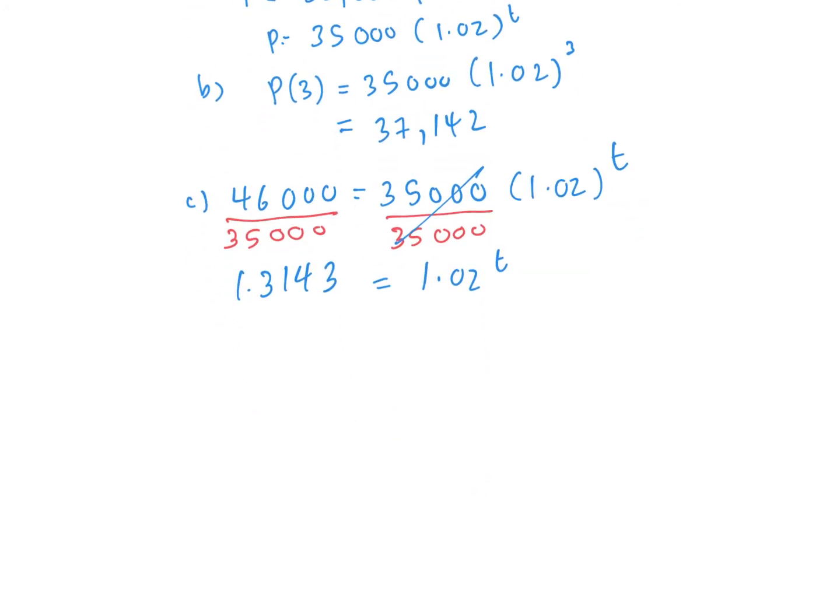I can't change this to the same base because it's not exact, but I could estimate. Let me do an estimate, then I'll show you another way to solve it. I want to figure out how many years. 1.02 to the power 1 is 1.02. Let's try 2. So 1.02 to the power 2 is 1.04—that's way too small. Let me jump to 5. So 1.02 to the power 5 is 1.104.